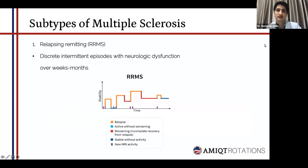Regarding the subtypes of multiple sclerosis, one of the three major variants is the relapsing remitting type, or RRMS. Discrete intermittent episodes are usually seen with further worsening of neurological features, with periods of relapsing and remitting varying between weeks and months. On the graph, the orange bar graphs indicate a relapsing episode, with a blue line indicating an active episode without worsening, followed by an orange and then a red line indicating worsening with incomplete recovery from the previous relapse, and then a dark blue line indicating a stable, progressive episode without any active phase.